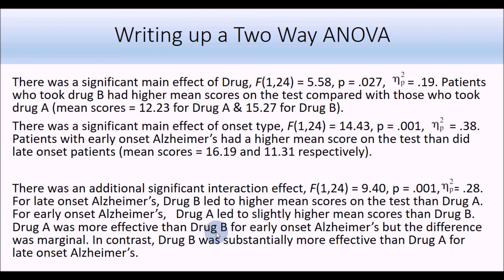One thing not covered in this tutorial - because you don't need it for the practical - is that you can follow up this interaction with what's known as simple effects analysis. This allows you to determine whether the marginal or substantial mean differences within the interaction are statistically significant. You can break the interaction down by all the separate subtypes and test for significant differences within them. If you want to look at that, it's in the Andy Field book - there's a technique using SPSS syntax. If you have your own data and want to follow it up with further analysis, those options are available.